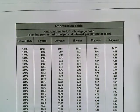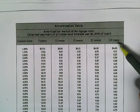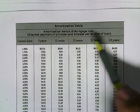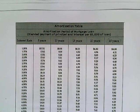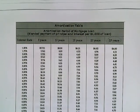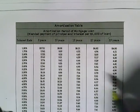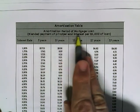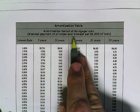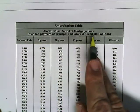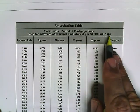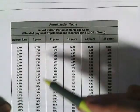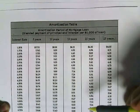Some banks offer 30 years, but for the most part we stay between the 20 and 25 year range. It's whatever you're going to be offered or whatever the question tells you. Notice that it's a blended payment of principal and interest, so every payment has principal and interest blended into it. The 'divided by 1000' comes from the fact that this is per thousand dollars of loan.